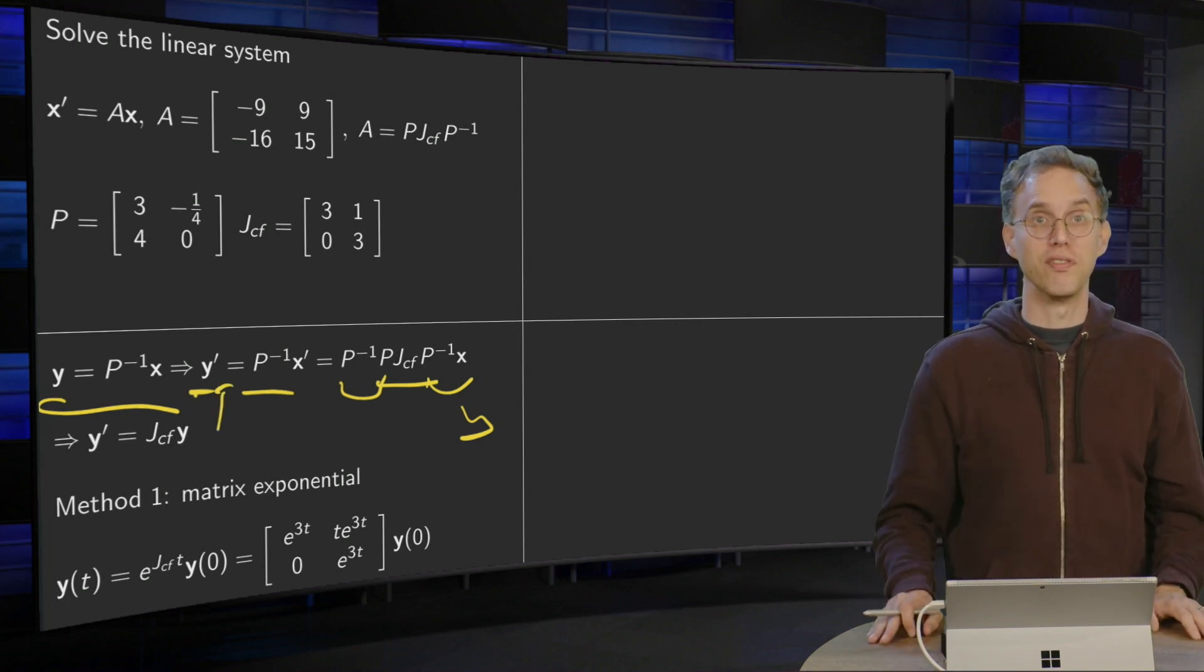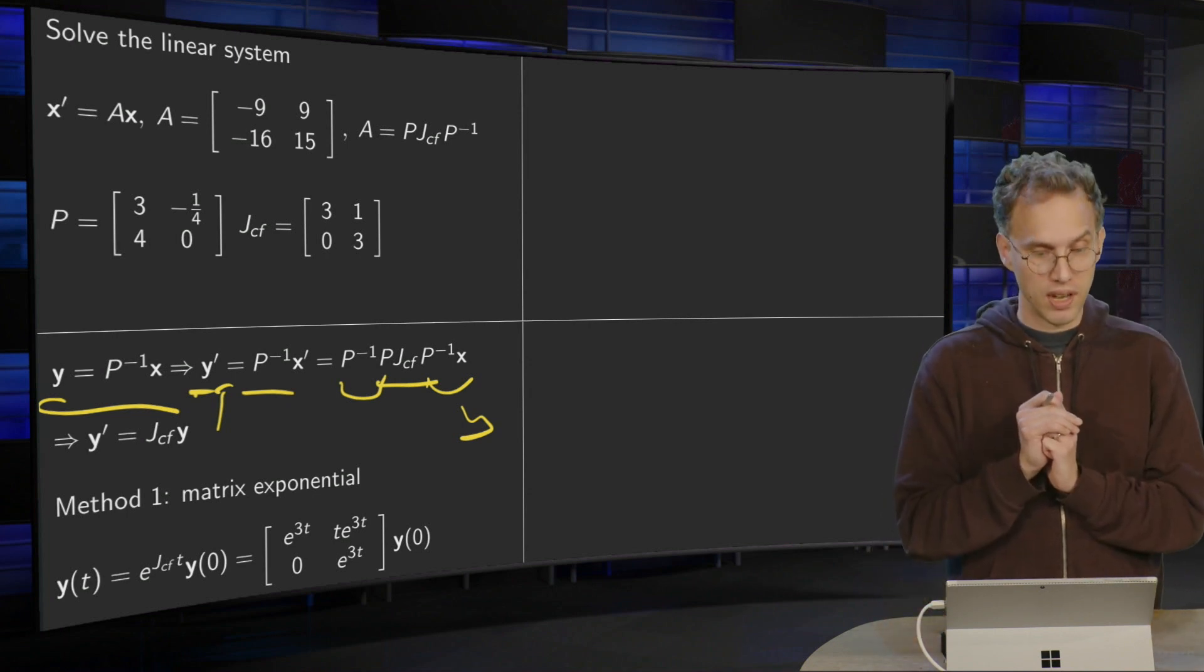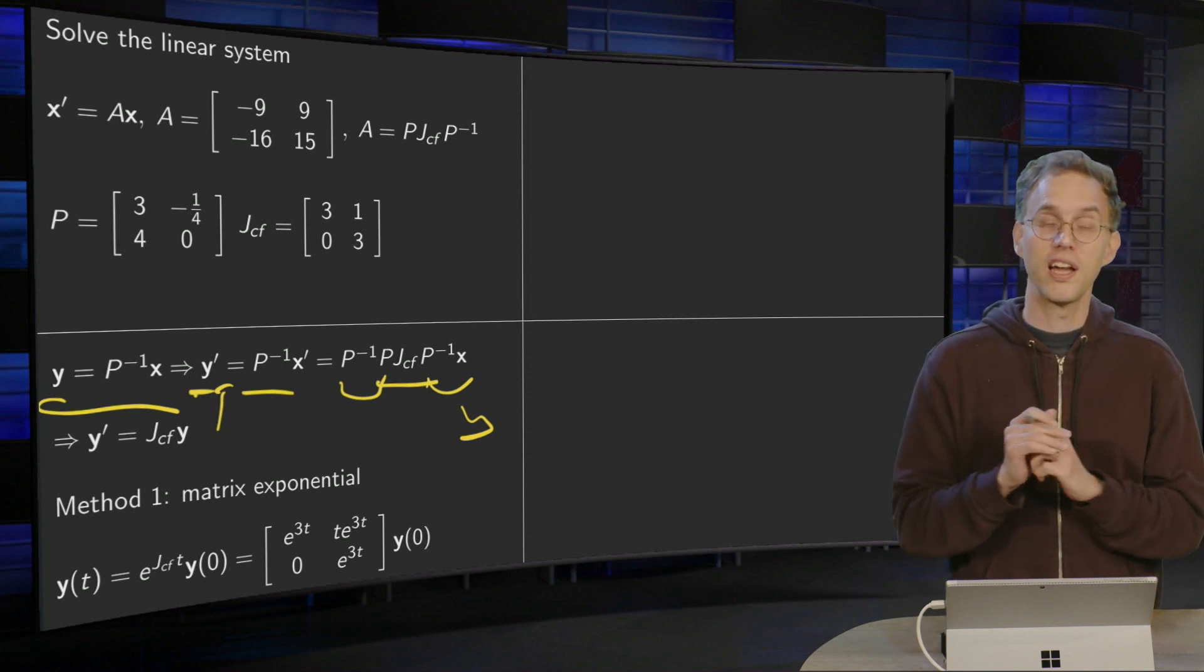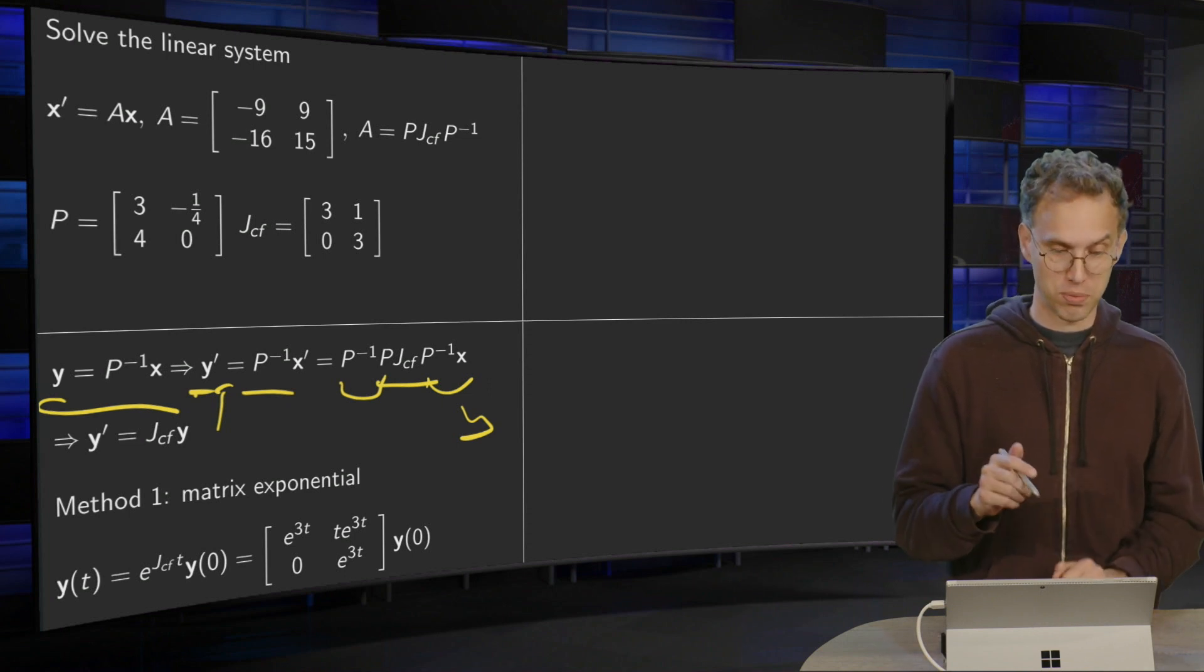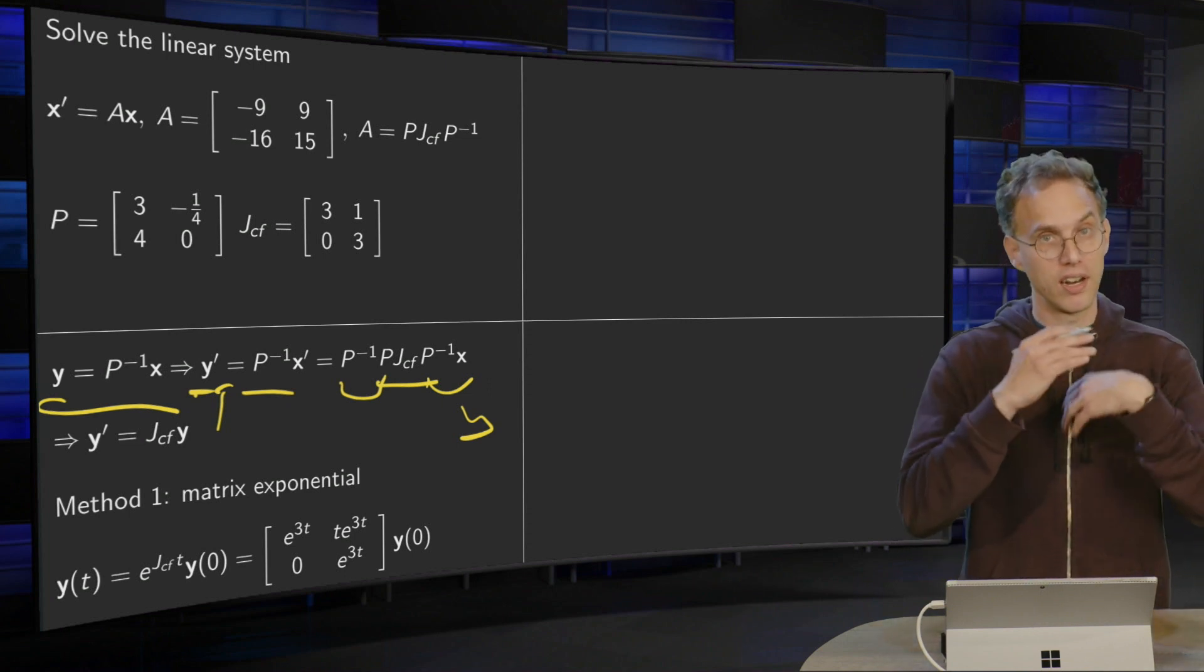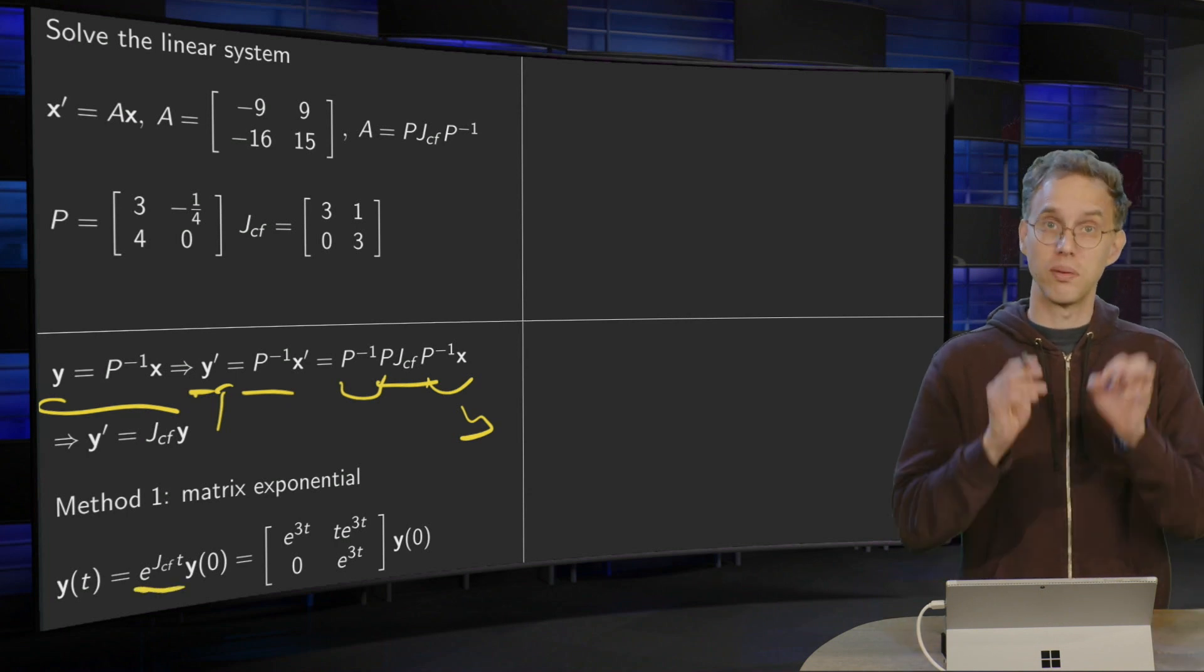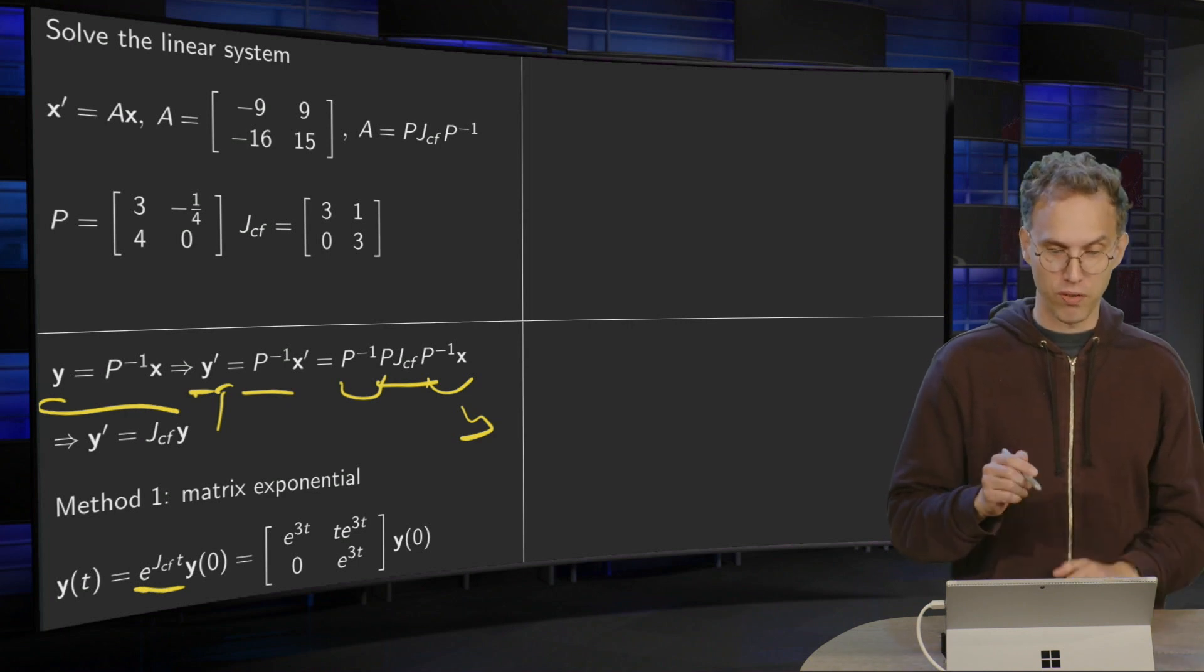Similar trick we have done before with, for example, a diagonal matrix. So what we need to solve now first is the problem, y' equals JCF times y. And we will do two methods. First, we can use the matrix exponential function. Then we can write down the answer immediately. y(t) equals e to the power JCF times t times y(0).